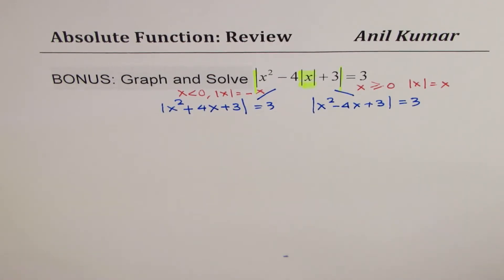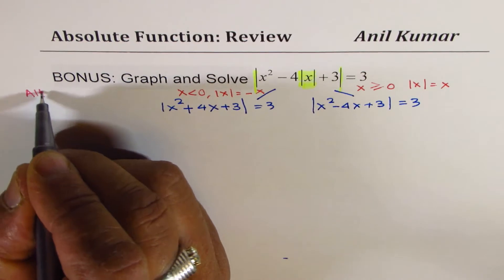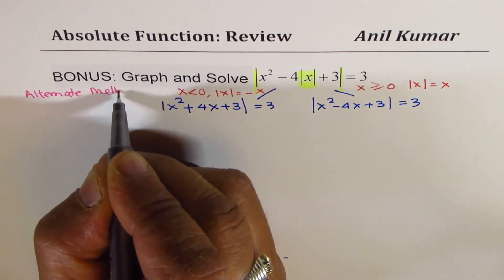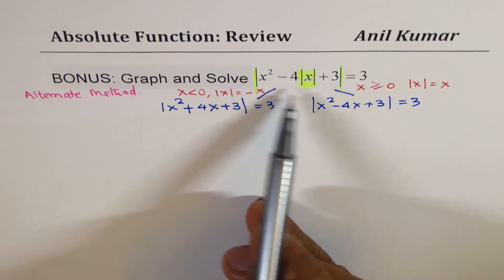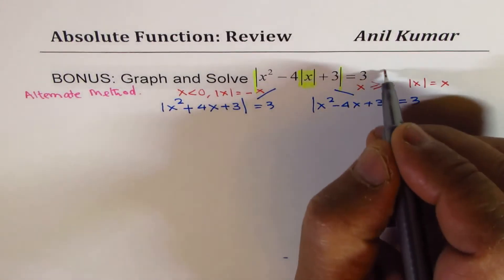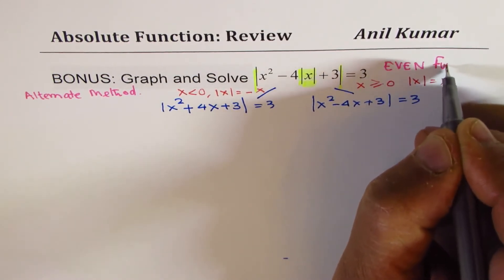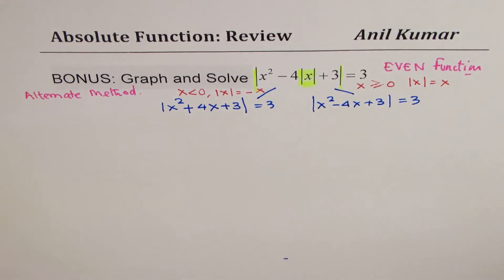Here is an alternate approach, which I will say alternate method. And that is to appreciate that this is an even function. It is an even function. How do I know it? Let's prove it first. So we'll try to prove that this function is an even function. And we'll then take from there.